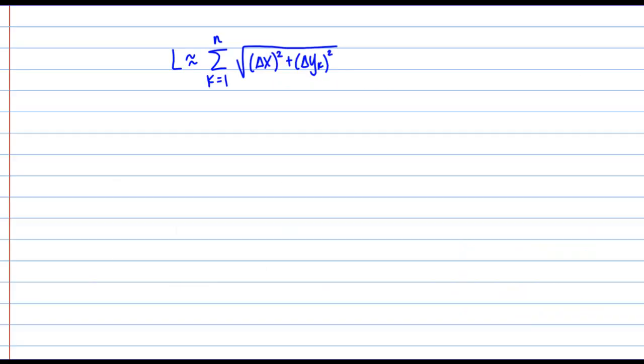Now, following the pattern we used in Riemann sums, the next thing we'd like to do is make this approximation exact by taking the limit as the number of subintervals n goes to infinity. However, there's one step we have to do first. It's going to cause issues to have both x's and y's in this expression, so I'm going to try to rewrite this delta y sub k.